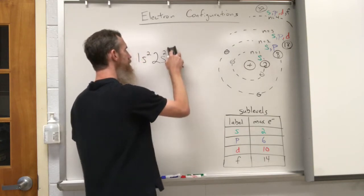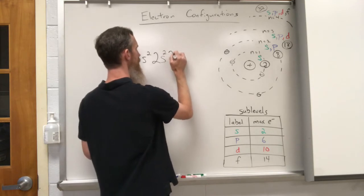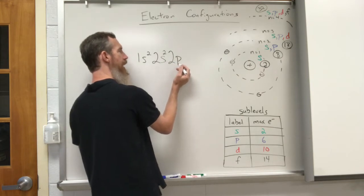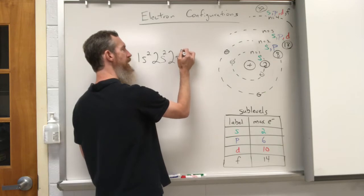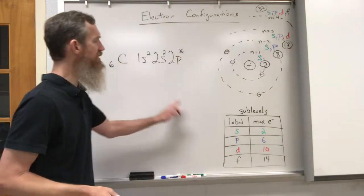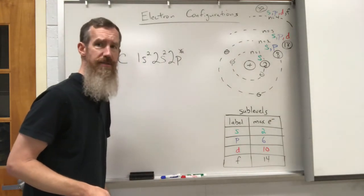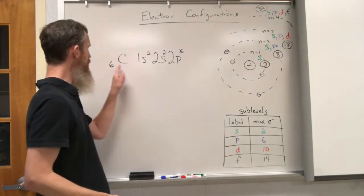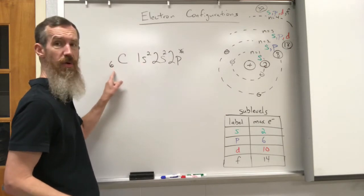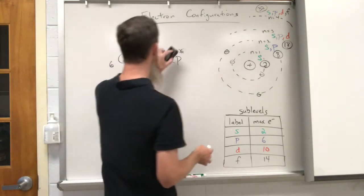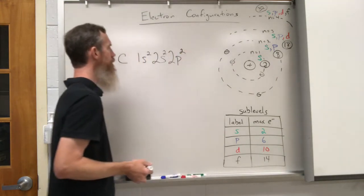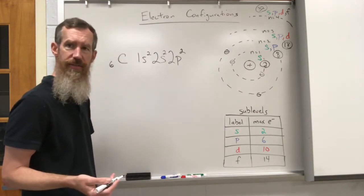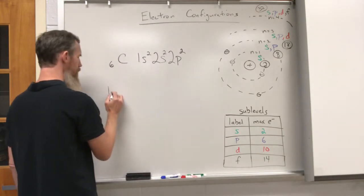You have to write the two, and then you write p — this is the p sub-level of the second energy level. Now we represent how many electrons go here. The p sub-level can hold up to six, but I don't need all six. I have two plus two, that's four out of six, so I have two more electrons to place. I put those two leftover electrons in the 2p. That tells me where all the electrons are living.